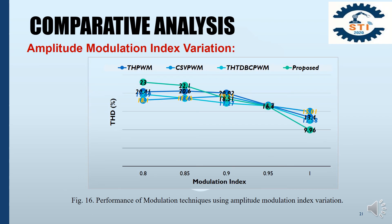The first parameter for comparative analysis is Amplitude Modulation Index Variation. Figure 16 shows the performance of modulation techniques using Amplitude Modulation Index Variation while the carrier frequency is fixed at 1 kHz. It is realized that the total harmonic distortion decreases with increasing Amplitude Modulation Index. The optimum THD value is obtained by the proposed modulation technique, CHPWM, CHVPWM, and CHTDBCPWM topologies at modulation index of 1. At normal modulation index, the proposed topologies reduce almost 33.09%, 43.43%, and 43.05% of THD compared to CHPWM, CHVPWM, and CHTDBCPWM modulation techniques respectively.